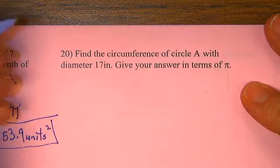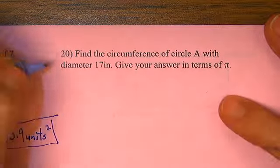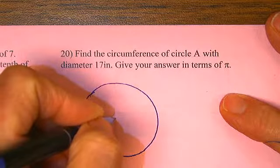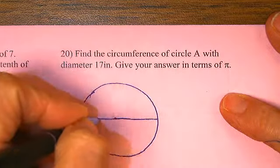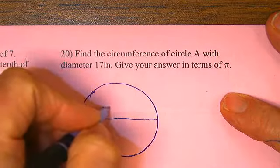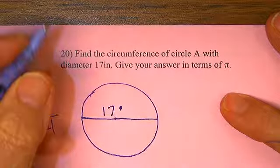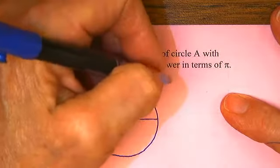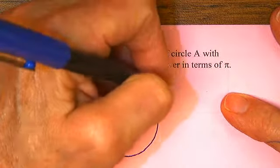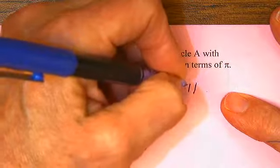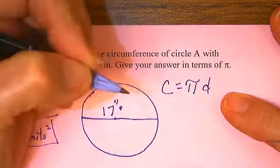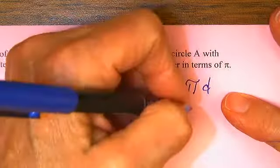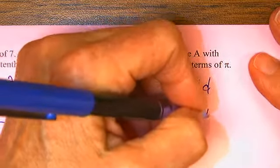A problem after my own heart. Okay. We have a circle. It has a diameter of 17 inches. That's supposed to be inches. I know that the formula for circumference is equal to pi times the diameter, which means the answer is 17 pi.